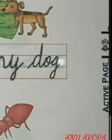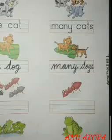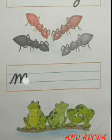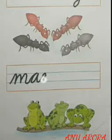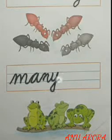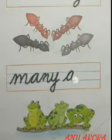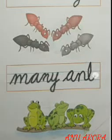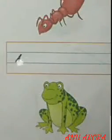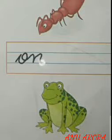Be particular about your cursive handwriting. Now we will write many ants. M-A-N-Y, many. A-N-T-S, ants. And one ant — O-N-E, A-N-T, ant. No S for one ant.